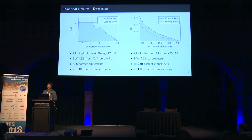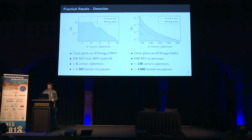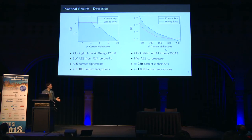We also performed the same experiment on an ATxMega256A3, this time targeting a hardware AES coprocessor rather than a software implementation. The numbers are quite different — the number of faulted encryptions is similar, but the number of correct ciphertexts is quite different. The reason is we don't really know what our fault actually did to the hardware AES coprocessor, so we can't really tell — but all we care about is that the attack works. Even on quite different platforms you can achieve similar results, even if you don't know what your fault is actually doing.